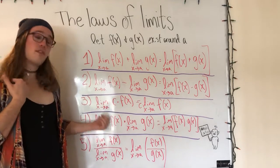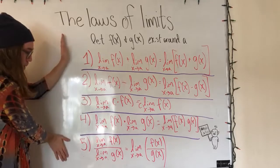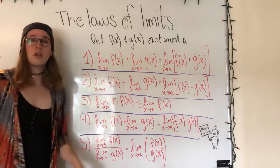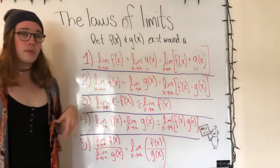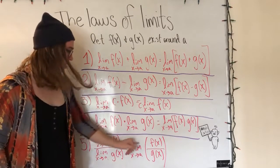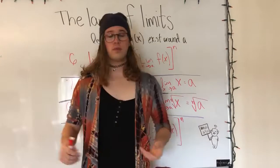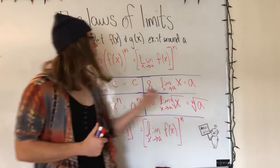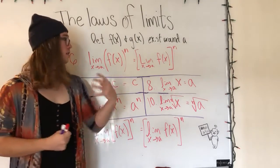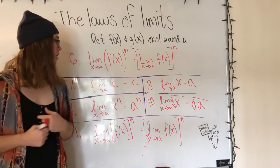We also have product and quotient rules — I would pause and take notes. Two limits multiplied together is the product of their limits. Two limits divided by one another is those two functions divided and then their limit. And the limit of f of x to the nth power is equal to the nth power of that limit of f of x.